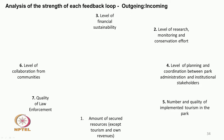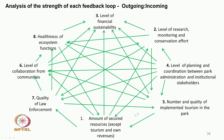Each loop has an outgoing and an incoming element, connecting each of the eight loops to all the others. For instance, the number and quality of implemented tourism in the park will impact positively on one loop and on the level of collaboration from communities, while all other loops serve as triggering loops that improve the number and quality of implemented tourism.